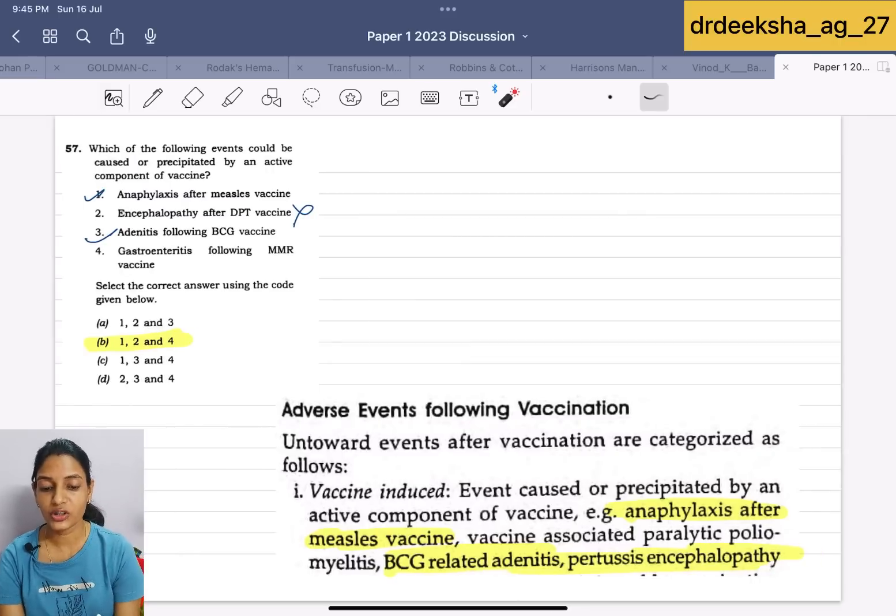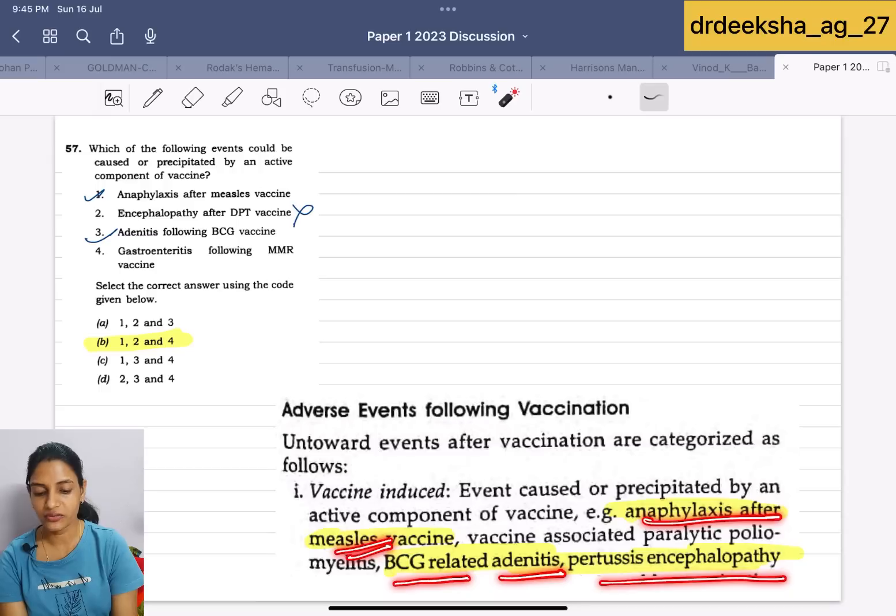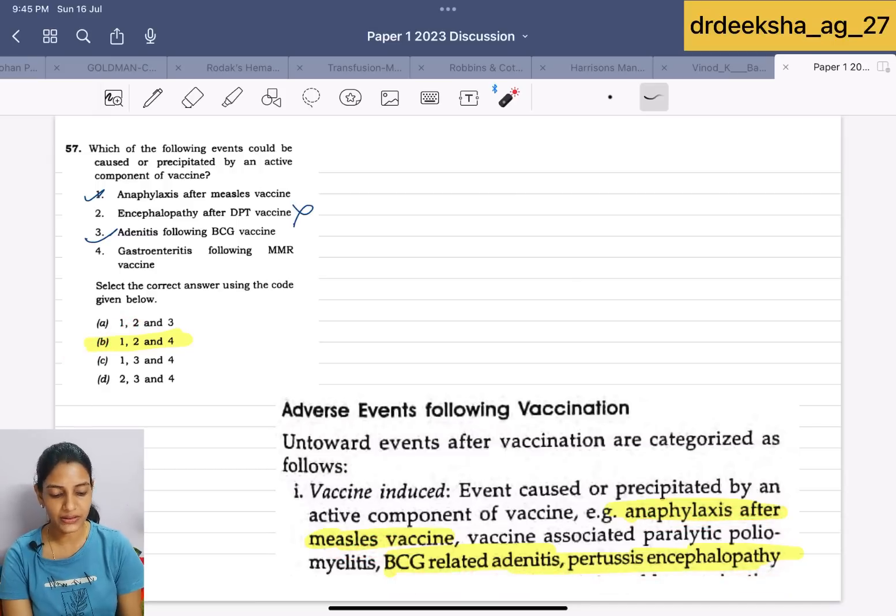Next question is which of the following event is precipitated by active component of vaccine. By active component of vaccine, we get anaphylaxis after the measles vaccine, BCG related adenitis and pertussis encephalopathy. Answer for this is 1, 2 and 4. Encephalopathy is after the BCG vaccine not the DPT vaccine. 1, 3 and 4 are true.